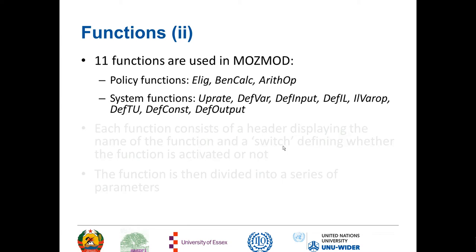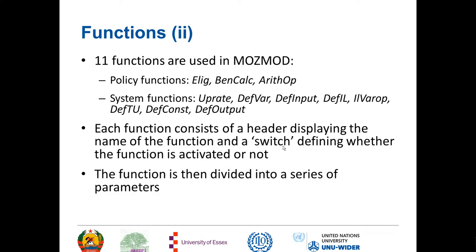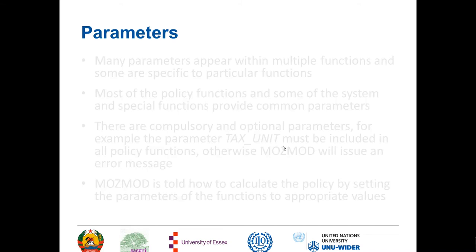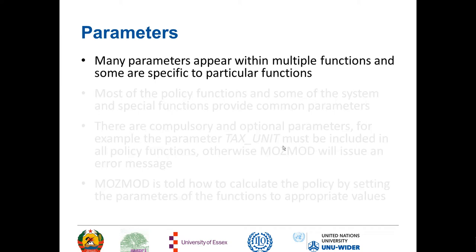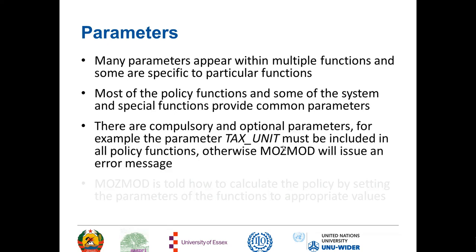We have eight system functions and three policy functions. Each function consists of a header displaying the name of the function and a switch defining whether the function is activated or not. The function is then divided into a series of parameters. Many parameters appear within multiple functions, and some are specific to particular functions. Most policy functions and some system functions have common parameters, but some have parameters relating only to a particular function. There are compulsory and optional parameters — for example, the parameter tax_unit must be included in all policy functions, otherwise MosMod will issue an error message.